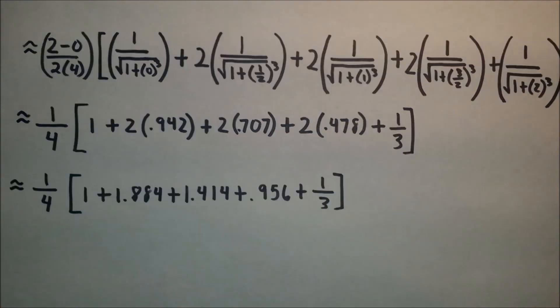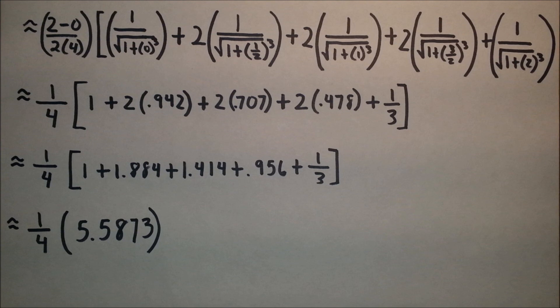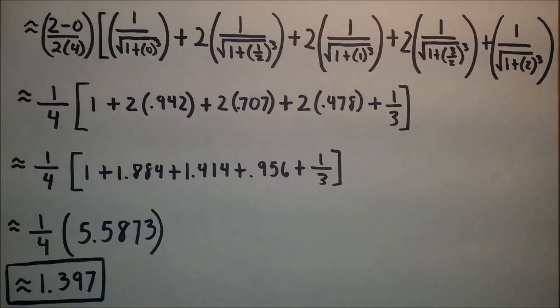So once we do a little bit more reducing, we wind up with 1/4 times [1 + 1.884 + 1.414 + 0.956 + 1/3]. Then we can reduce yet again, giving us 1/4 times 5.5873. Finally, we wind up with our approximation of 1.397.